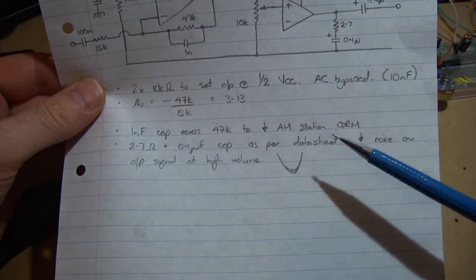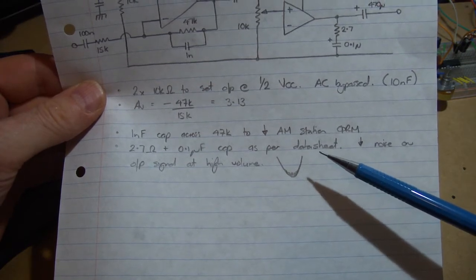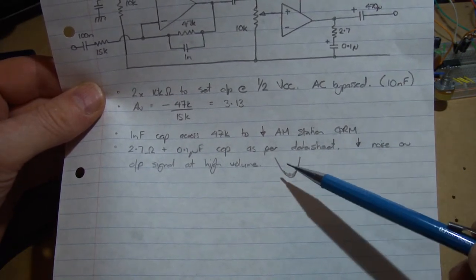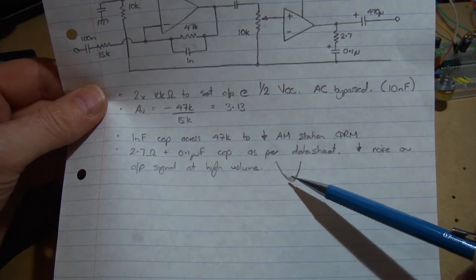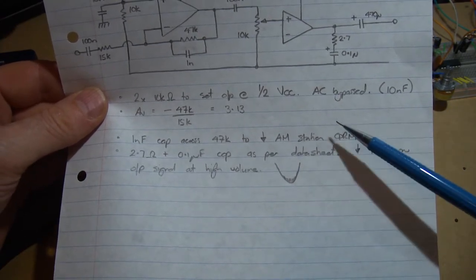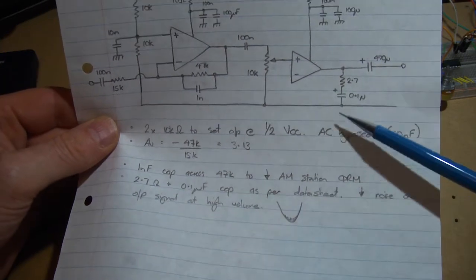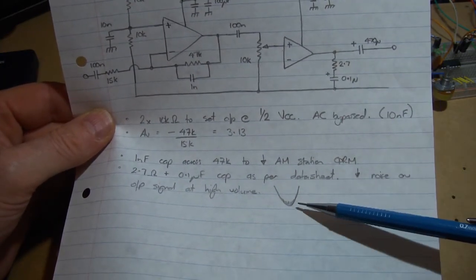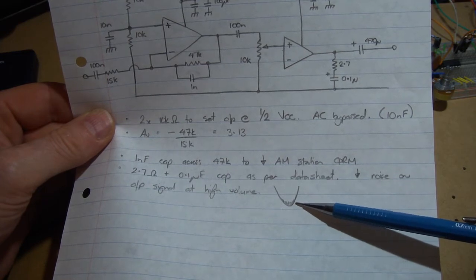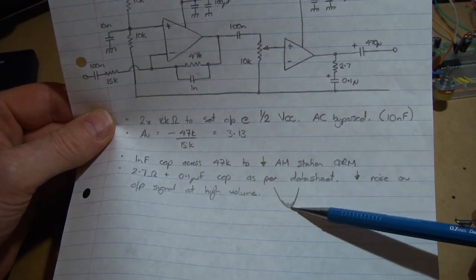It only happens when you've got the speaker hooked up, so it's got obviously something to do with the inductance of the speaker. But if you throw the little circuit there as per the data sheet, that noise there at very high volume levels just disappears and it's a nice clean sine wave.